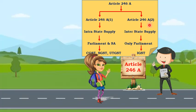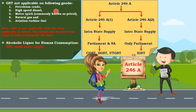Article 246A, Subsection 2 talks about inter-state supply — meaning supply from one state to another state or from one state to a UT. In that case, only Parliament has the right to make law, and under this power, Parliament made the IGST Act — Integrated GST. Please also note that as per the current GST Act, we cannot levy any tax on alcoholic liquor for human consumption — not now, not ever in the future. The Constitution has straightforwardly prohibited it. However, for 5 petroleum products — Petroleum Crude, High Speed Diesel, Motor Spirit, Natural Gas, and Aviation Turbine Fuel — GST is not applicable now but may be applicable in the future. The Goods and Service Tax Council shall recommend the date.